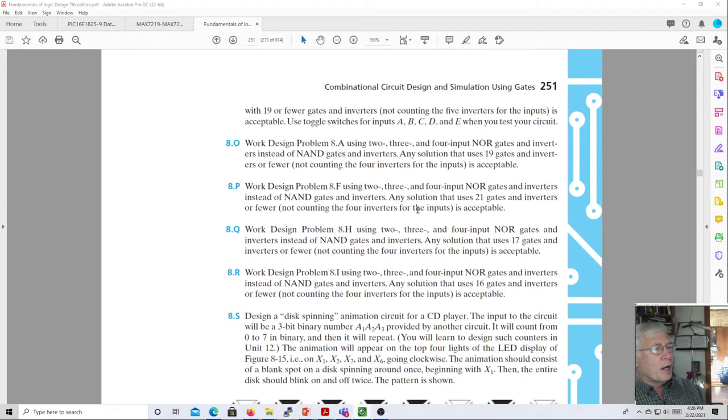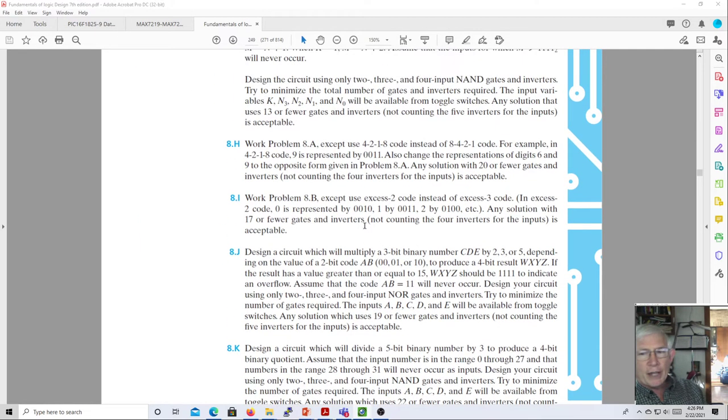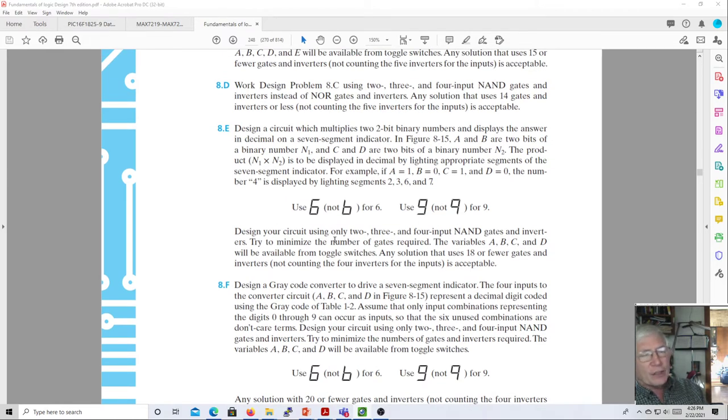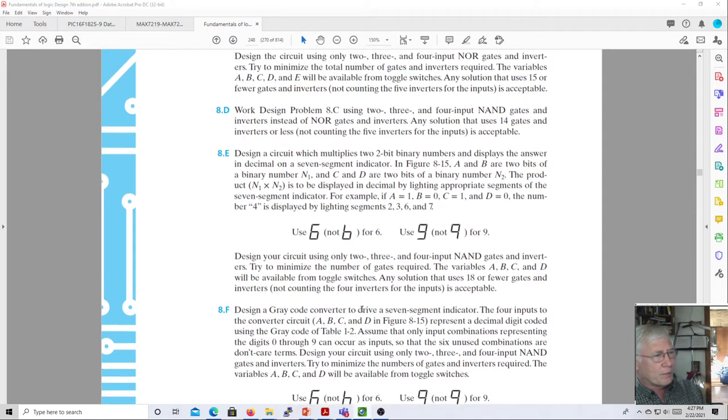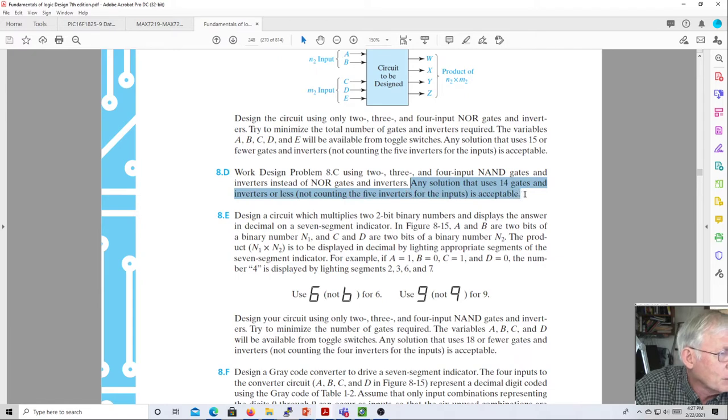Some of them require you to use five variable K-maps. Some of them require the solution in AND gates. Some require it in NOR gates. NAND gates and NOR gates, those are the two choices. And a few of them specify different configurations for the six and the nine. So make sure you use the correct configuration. Every problem gives you a maximum number of gates, like this one. Any solution that uses 14 gates and inverters or less, not counting the five inverters for the inputs, is acceptable.